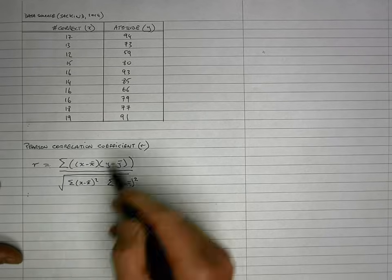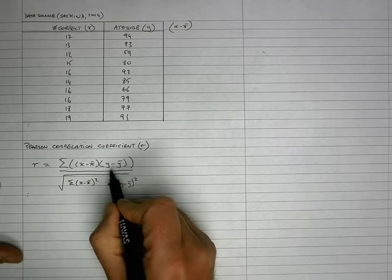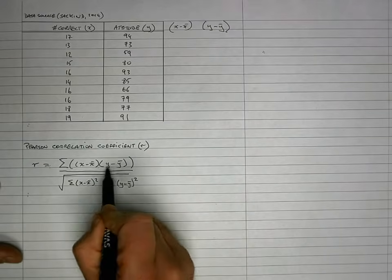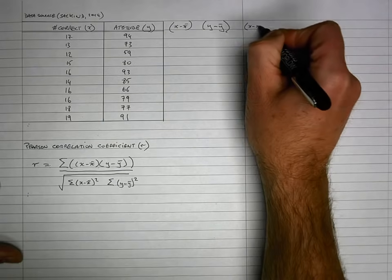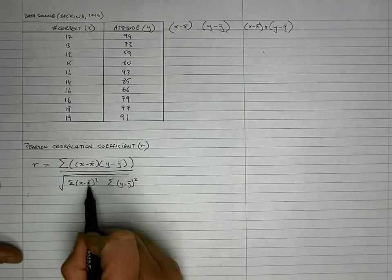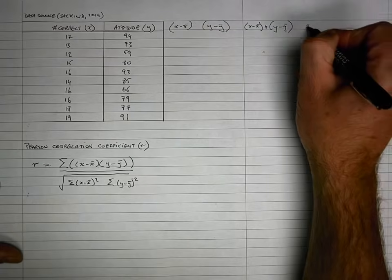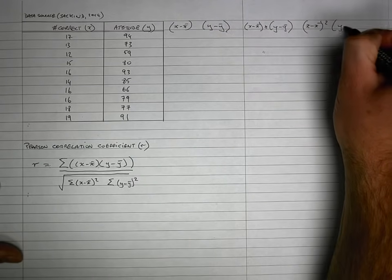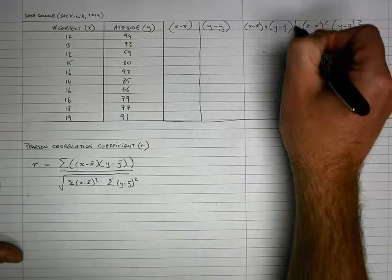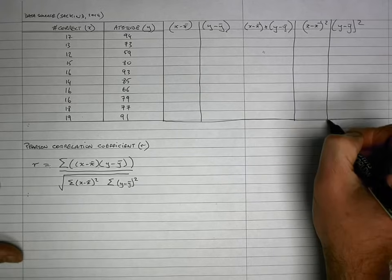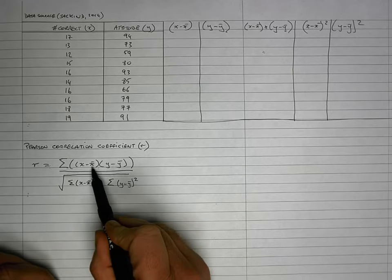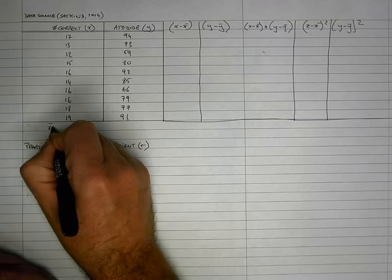Let's start out by working out X minus X̄, so I'm going to set a column for that. Then I need to work out Y minus Ȳ in a second column. I also need a column for (X − X̄) multiplied by (Y − Ȳ), a column for (X − X̄) squared, and a column for (Y − Ȳ) squared. This is the setup I need each time I do a correlation calculation. The first thing I need from my formula is the mean of X, X̄, and the mean of Y, Ȳ.